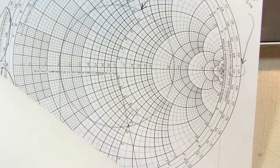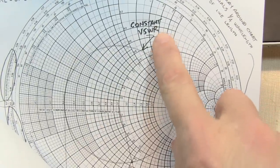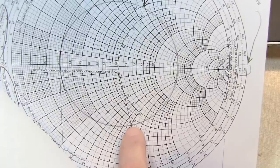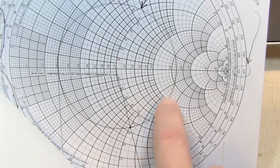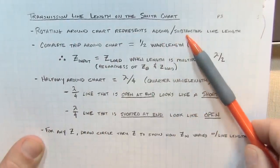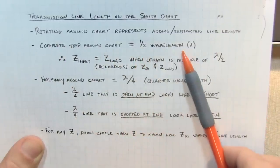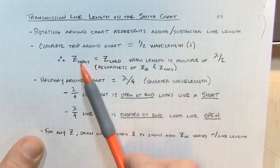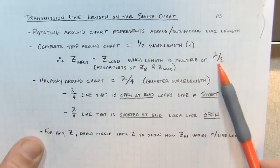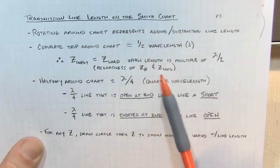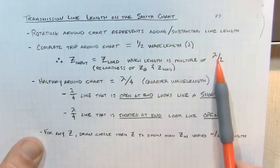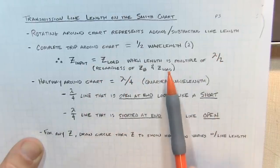Any circle on the Smith chart drawn concentric with the center represents a constant VSWR or constant return loss, no matter where you are on that circle. Any point on that circle represents a different impedance. Rotating around the Smith chart represents adding or subtracting line length. A complete trip around represents a half wavelength of transmission line length. Therefore, the input impedance looking into that transmission line equals the load impedance whenever the line length is a multiple of half wavelength. That's regardless of the line impedance - could be 50, 75, or 100 ohm line.